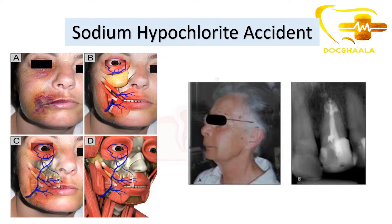As you can see in this image, this is the anatomical site of the sodium hypochlorite accident. You can observe the infraorbital area being affected and the corner of the mouth — the angle — being affected. Here you can see the areas which are affected due to the sodium hypochlorite accident. This is a person and this is the tooth, and as you can see, the apical foramen is not proper and the irrigant solution has gone beyond the apical foramen.